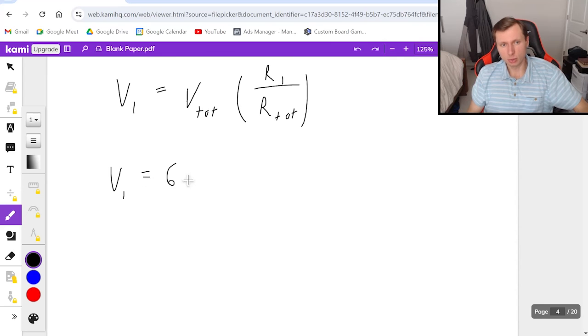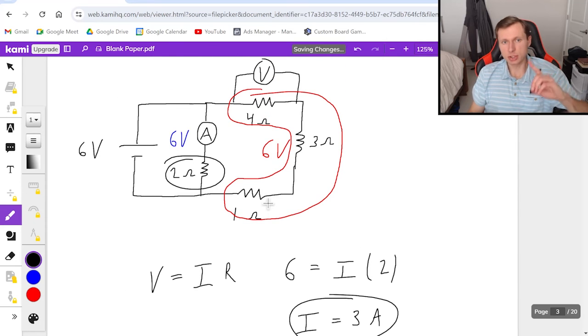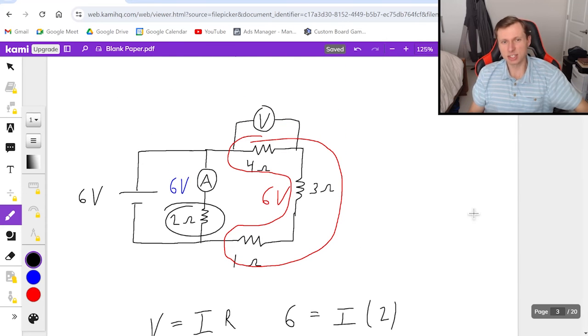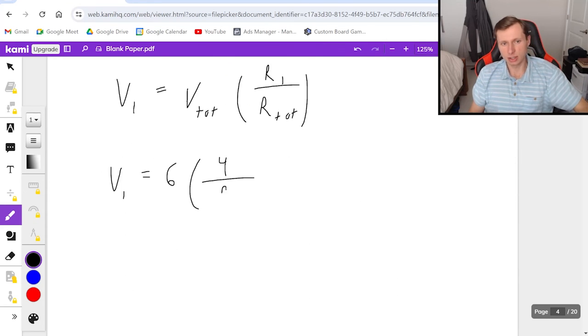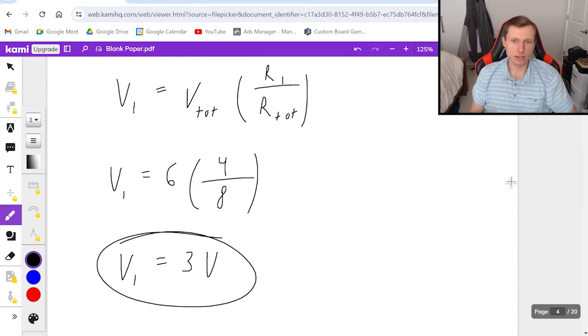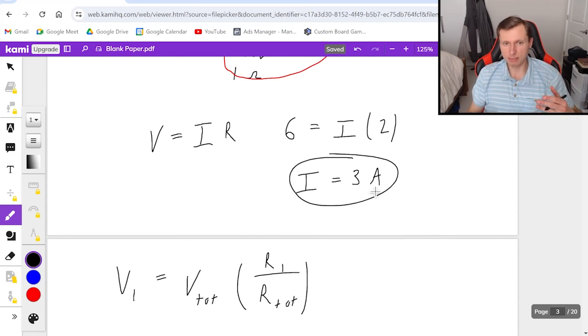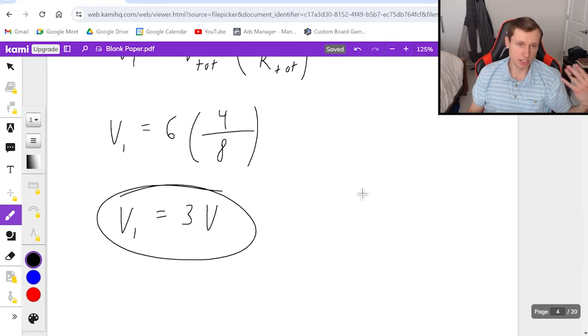So anyways V1 equals the total six times resistor one which is four divided by the total resistance. This is not the total resistance of the whole circuit. This is just the total resistance of the three resistors in series. So it's four plus three plus one or eight ohms. And that's going to be V1 equals six times one half, three volts. And there are my readings on the ammeter which was three amps and the reading on the voltmeter is three volts.